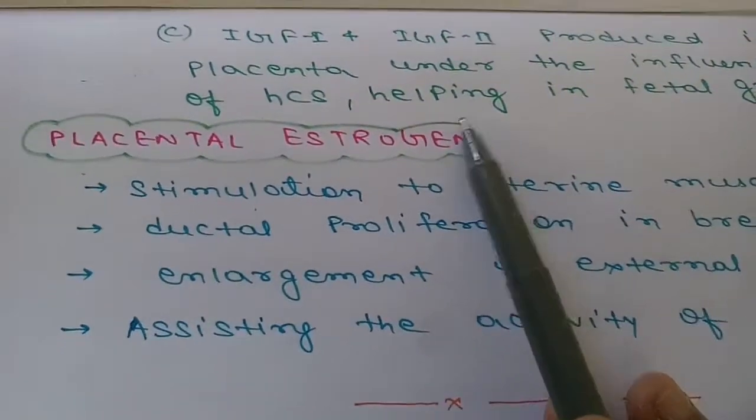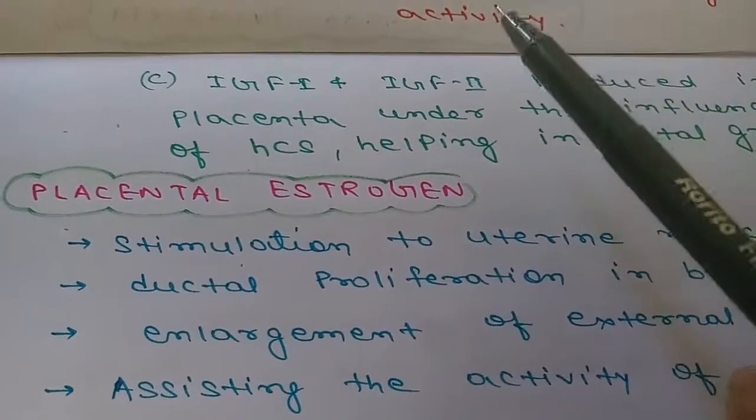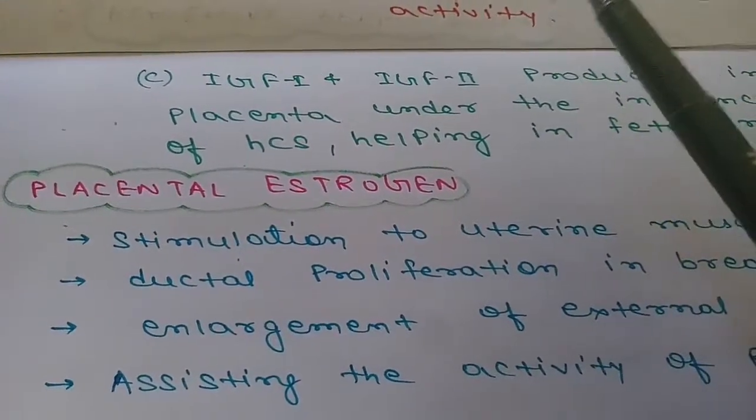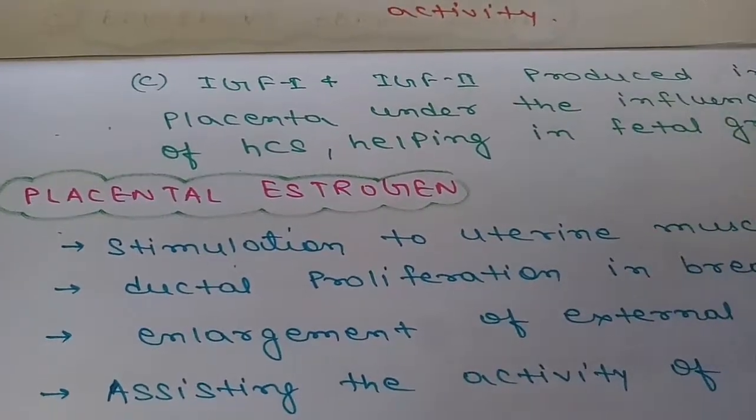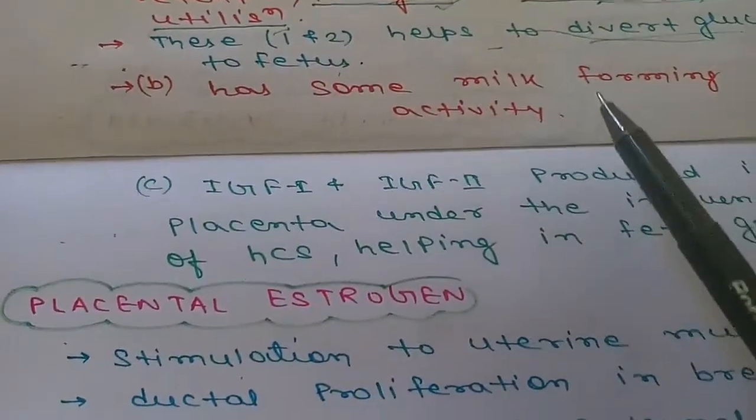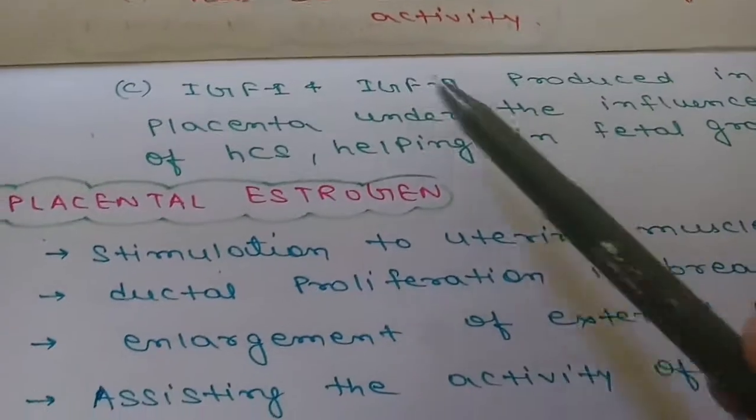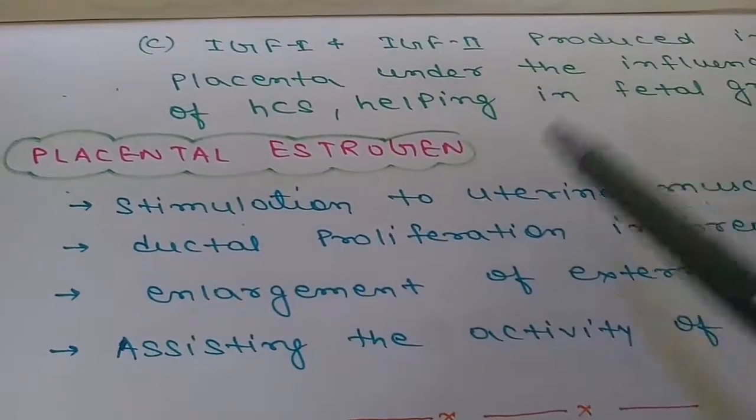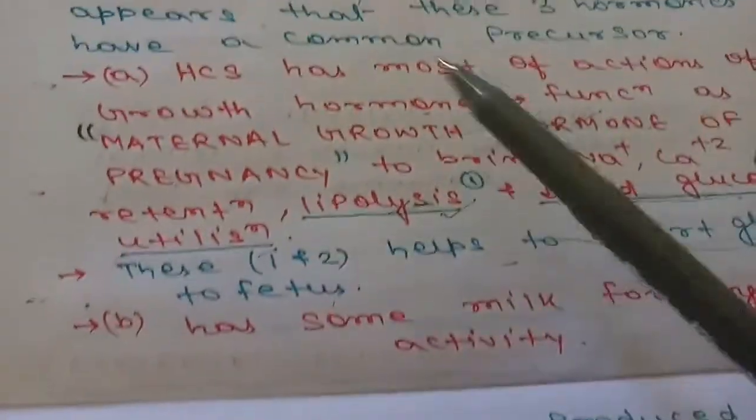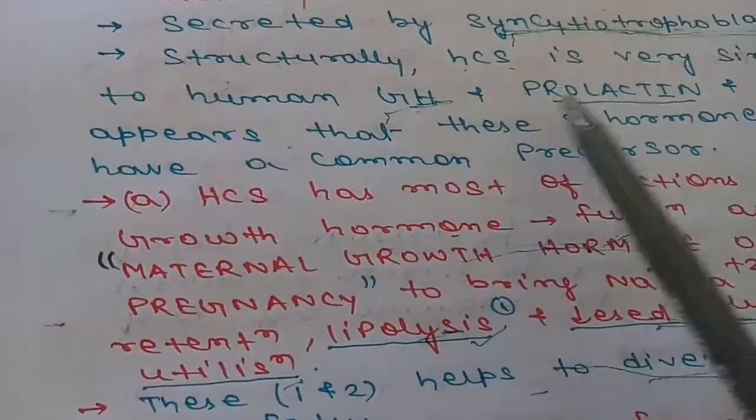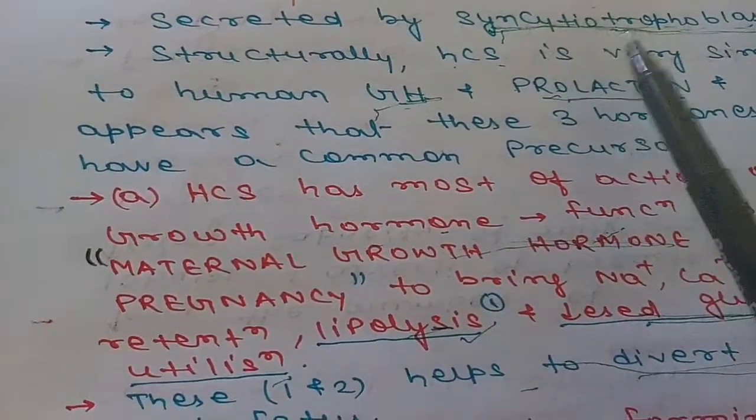These were the functions of HCS. First function was like that of growth hormone, the second was milk forming or lactogenic activity, and the third was insulin growth factor production. The two important structural points were structural similarity with growth hormone and prolactin, and it was secreted by syncytotrophoblast.